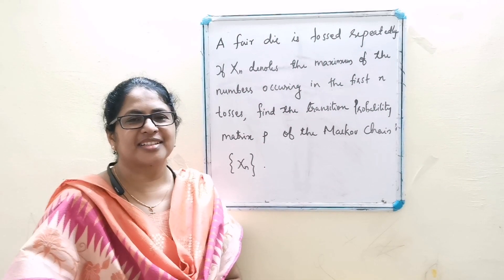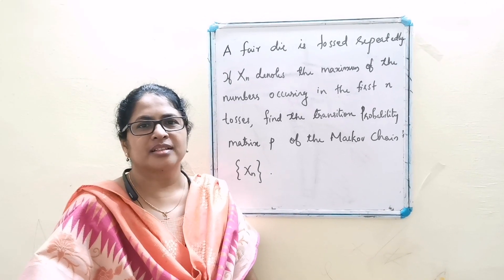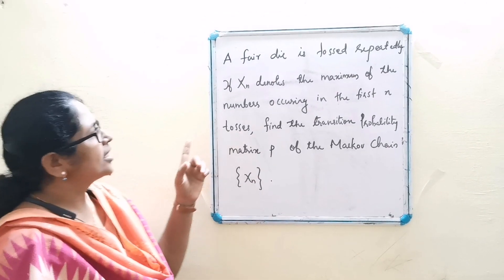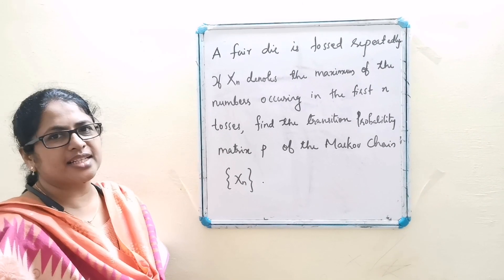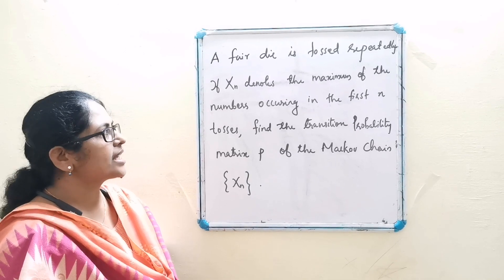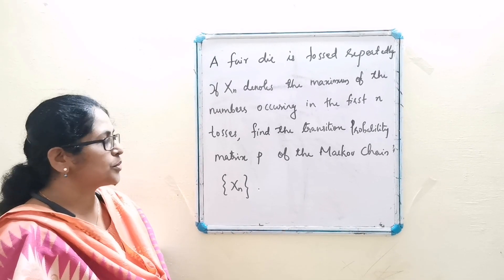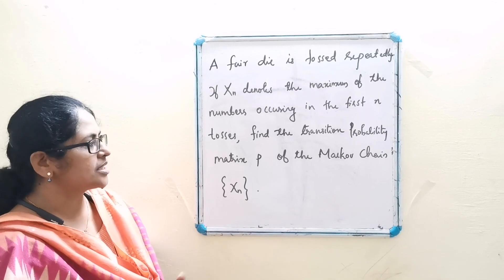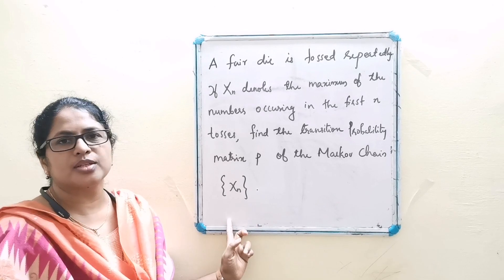Good morning. Today we have another problem related to transition probability matrices. A fair die is tossed repeatedly. If Xn denotes the maximum of the numbers occurring in the first n tosses, find the transition probability matrix P of the Markov chain sequence.